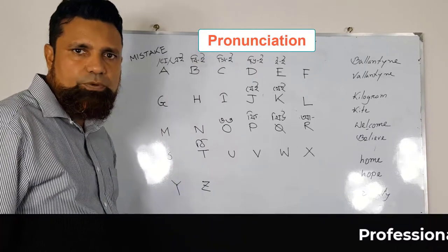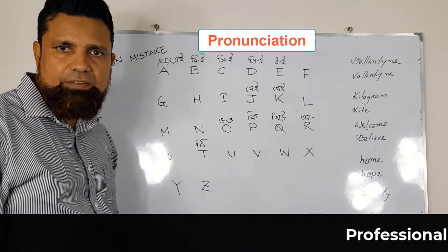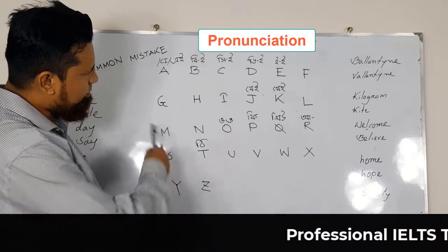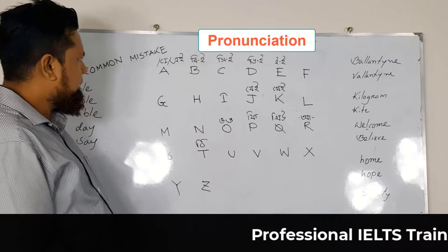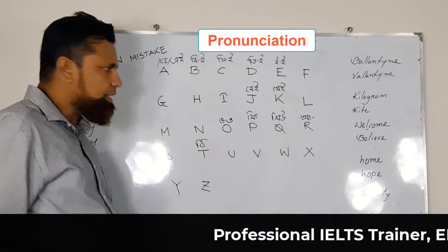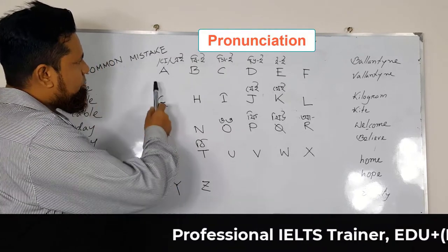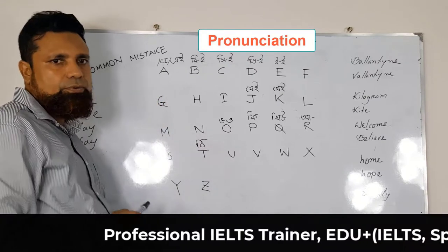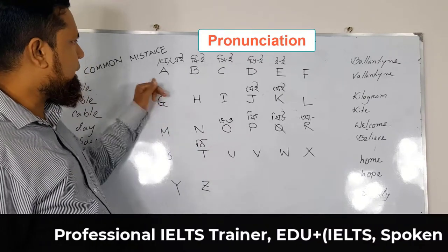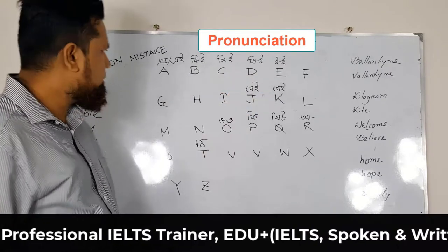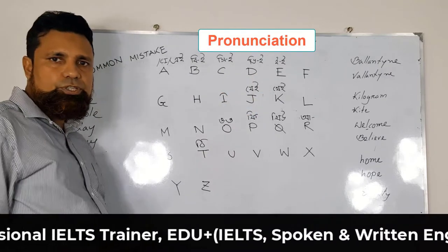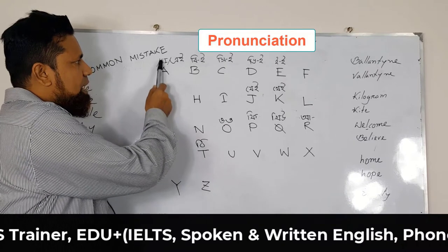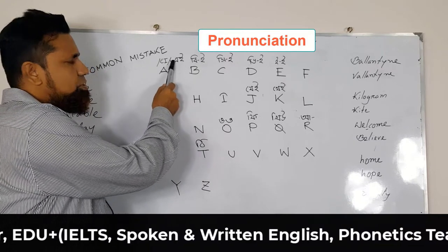We have some problems in pronouncing the alphabets. Let's look at the alphabets I've written over here, and let's read with me. We call this A, right? We Bangladeshis call this A, B, C, D like this. But the correct pronunciation should be A — not A. It should be A.